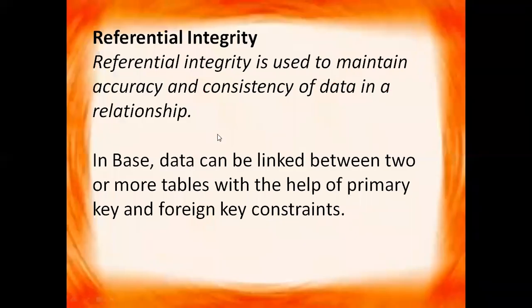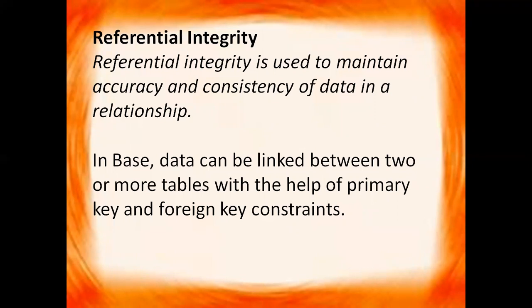Now the term referential integrity comes up. What is referential integrity? Referential integrity is used to maintain accuracy and consistency of data in a relationship. It is a constraint used to create a relationship between two tables. In Base, data can be linked between two or more tables with the help of primary key and foreign key constraints.